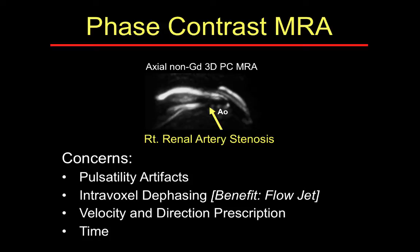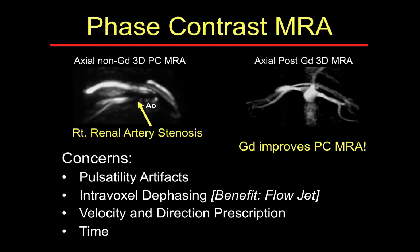There are other concerns with phase contrast. It can be difficult a priori to know the velocity or direction of flow in the structure being imaged. Since you have to perform gradient application in all three planes, it is generally a longer acquisition than time-of-flight. One important thing to note is that phase contrast still works after the administration of gadolinium — the phase contrast signal is quite significant post-gadolinium. When a gadolinium-enhanced MRA fails, you can perform a phase contrast to supplement.